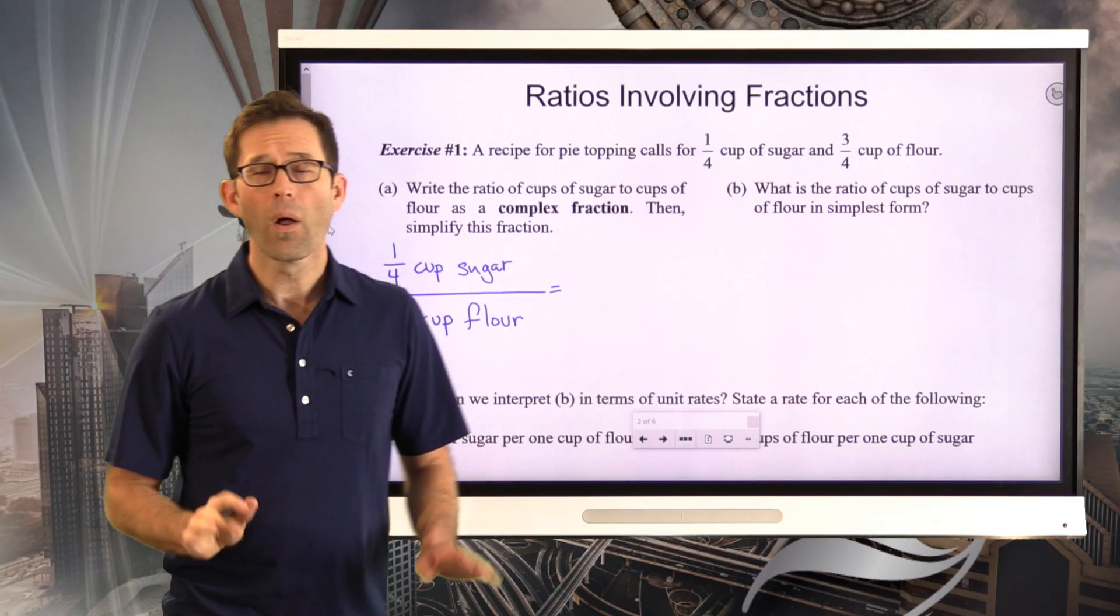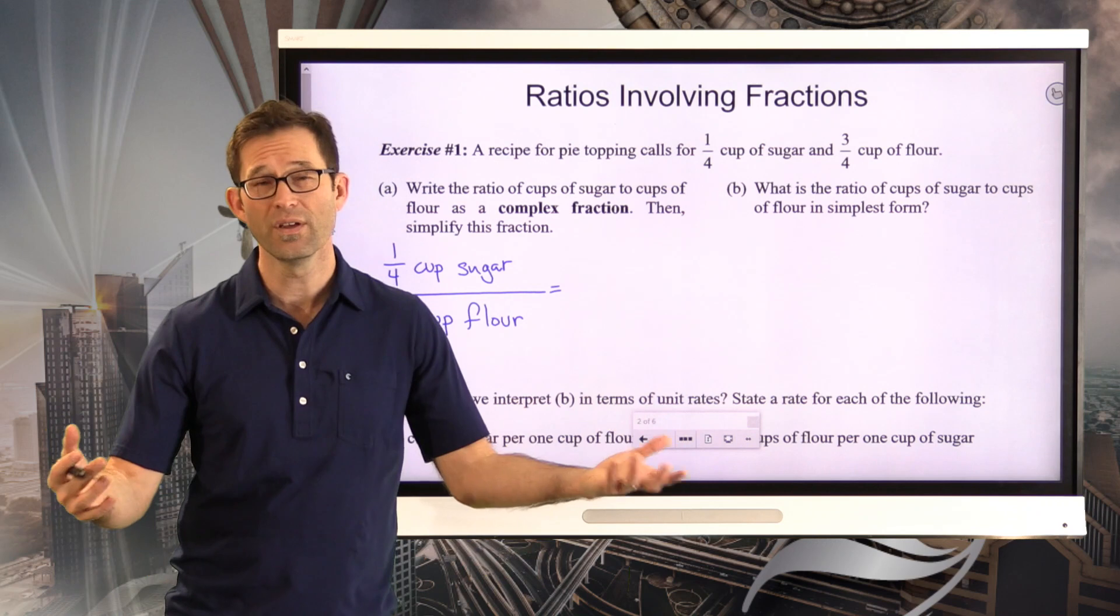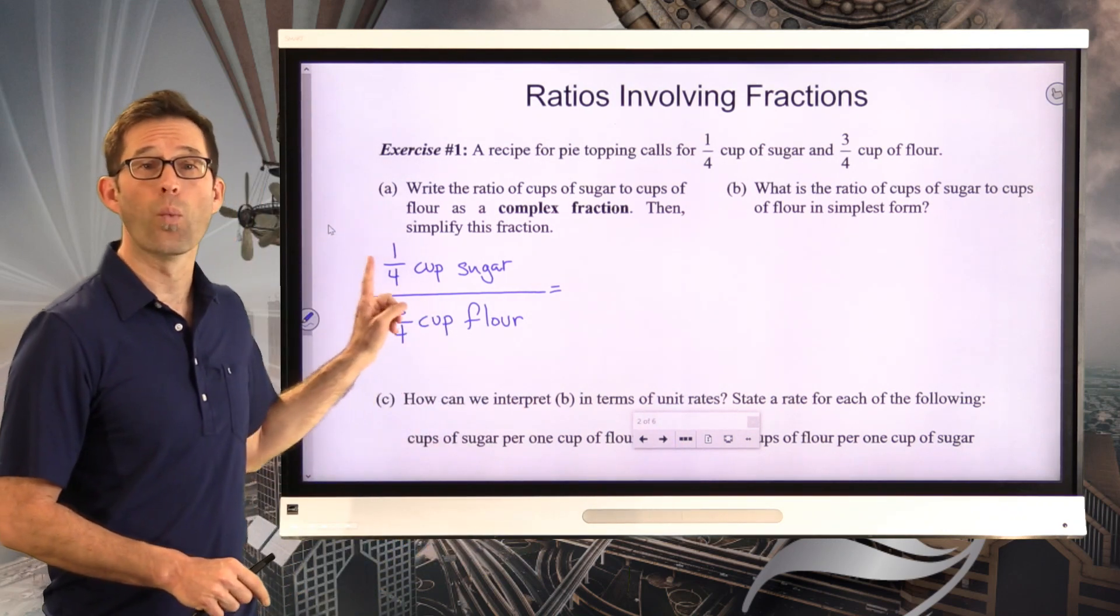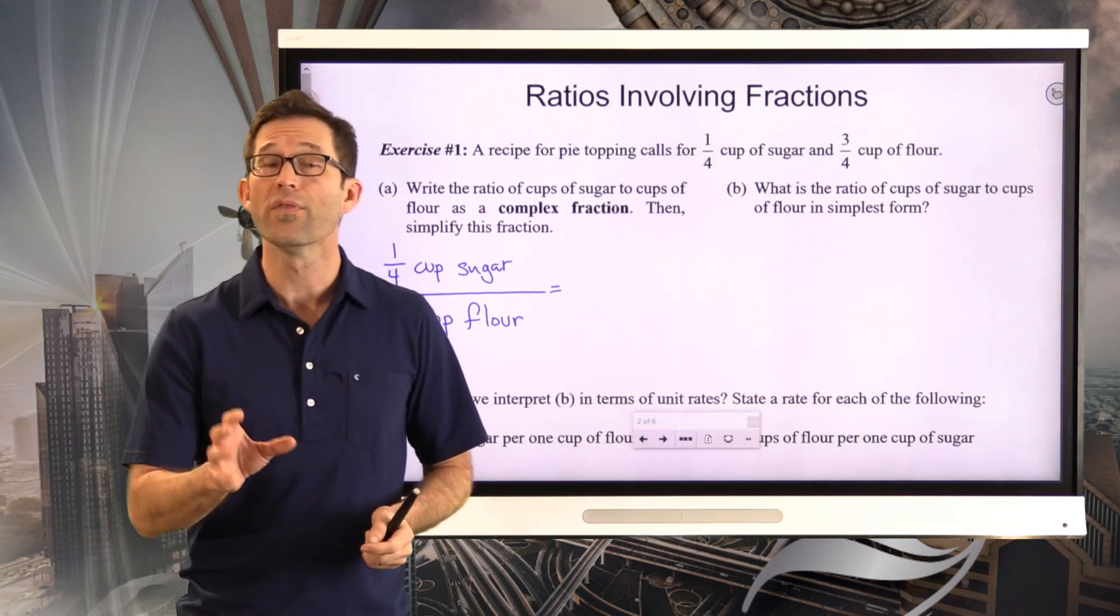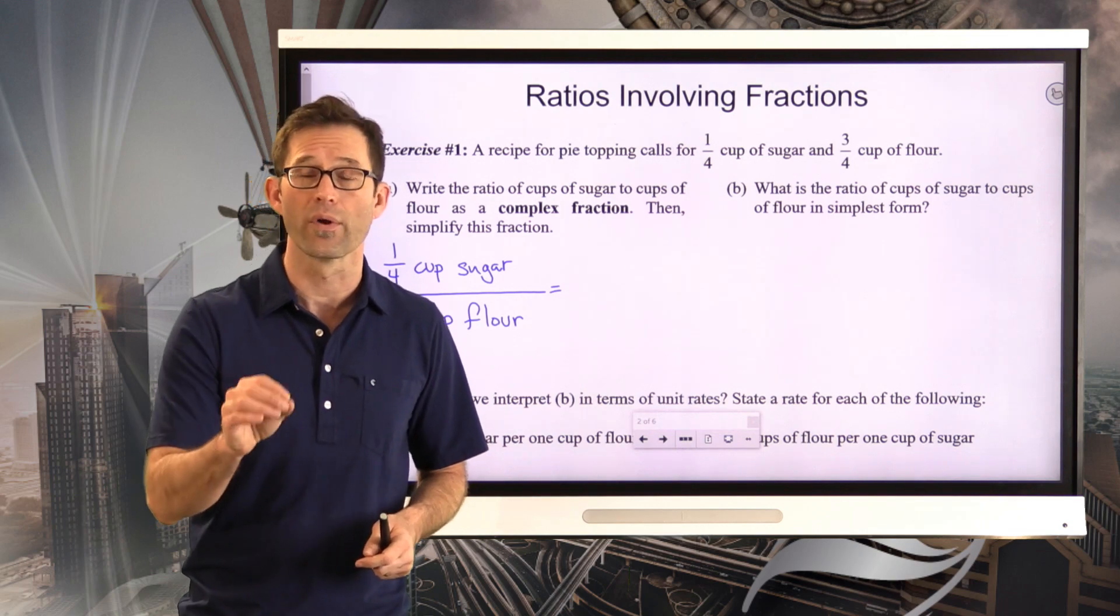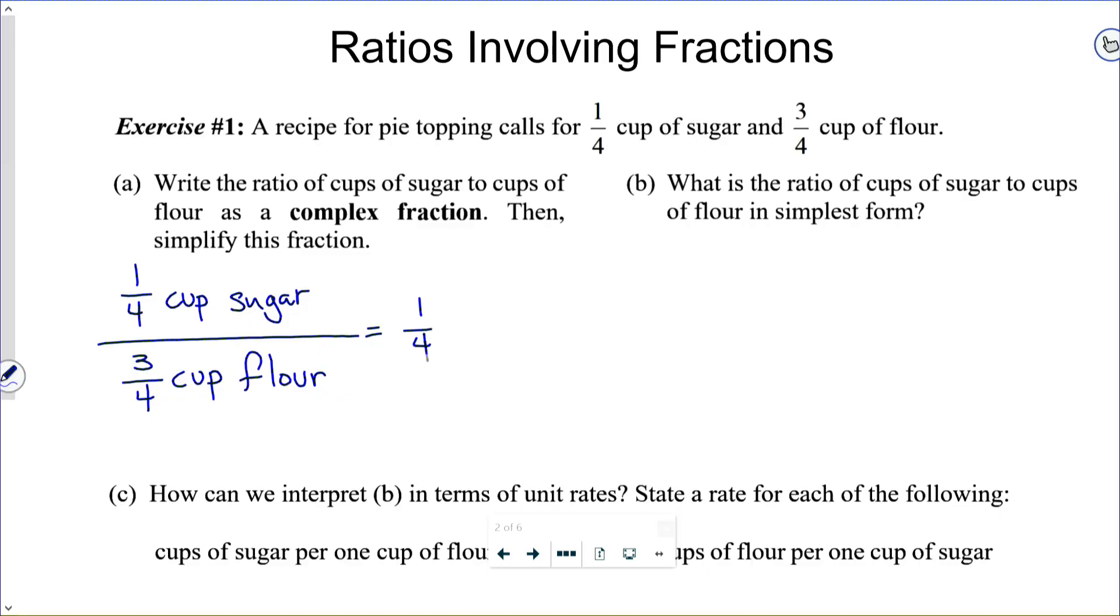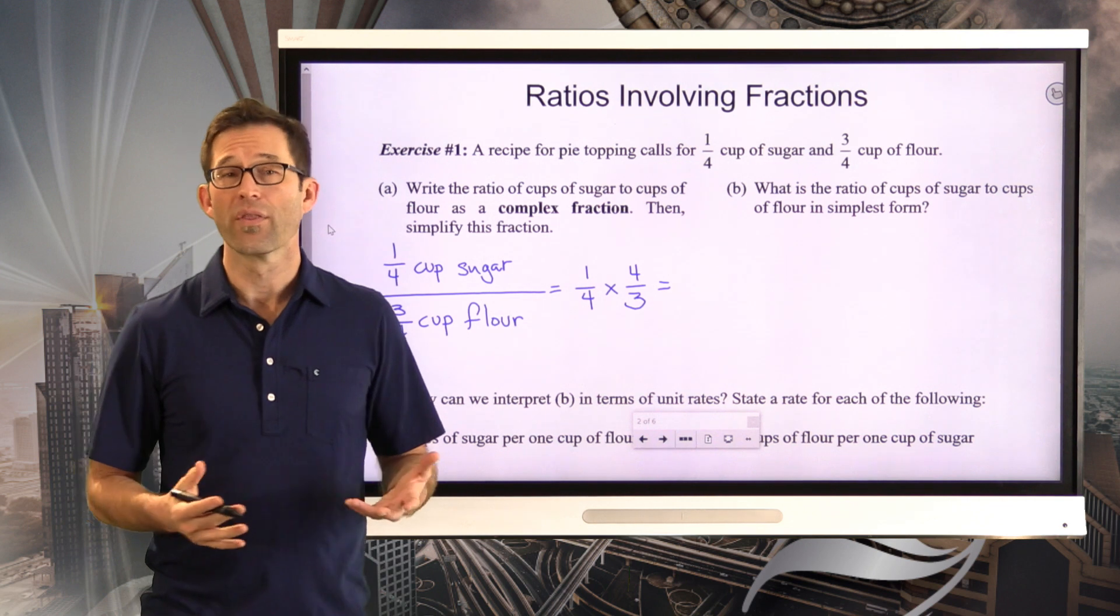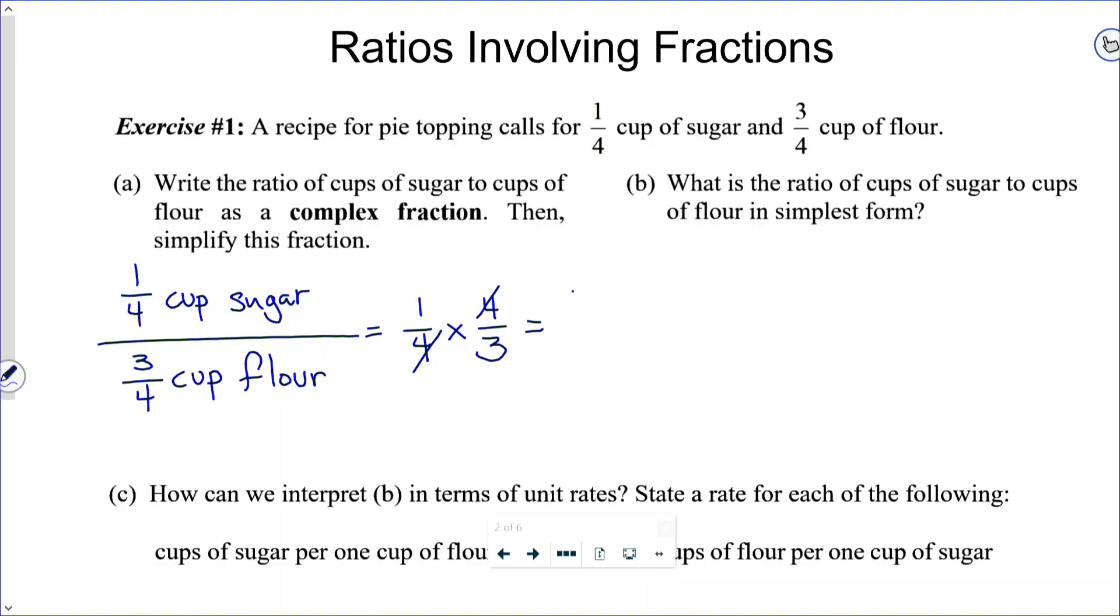Now, all I want to do at this point is simplify this. Keep in mind, fractions are always about division. So I literally have, in this case, one-quarter divided by three-quarters. In order to simplify a complex fraction, what we then do is we use the fraction division algorithm, which says to keep the first fraction the same, change the division into multiplication, and multiply by the reciprocal of the second fraction. Now, one of the great things about this particular case is that we've got some nice cross-cancellation going on between the fours, and then we just end up with one-third.